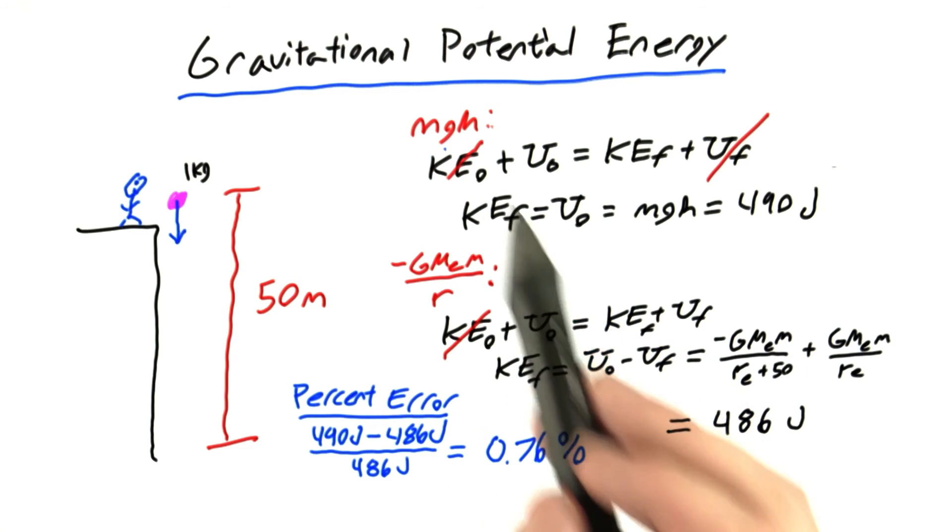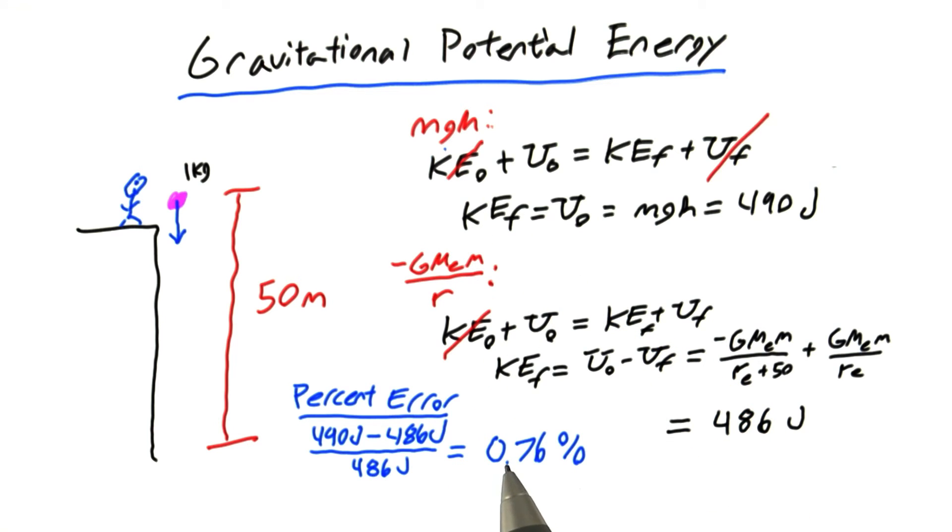So really, MGH is pretty good for calculating gravitational potential energy over distances like 50 meters. But as we'll see later, if we need to do much larger distances, we'll have to use this version of gravitational potential energy.